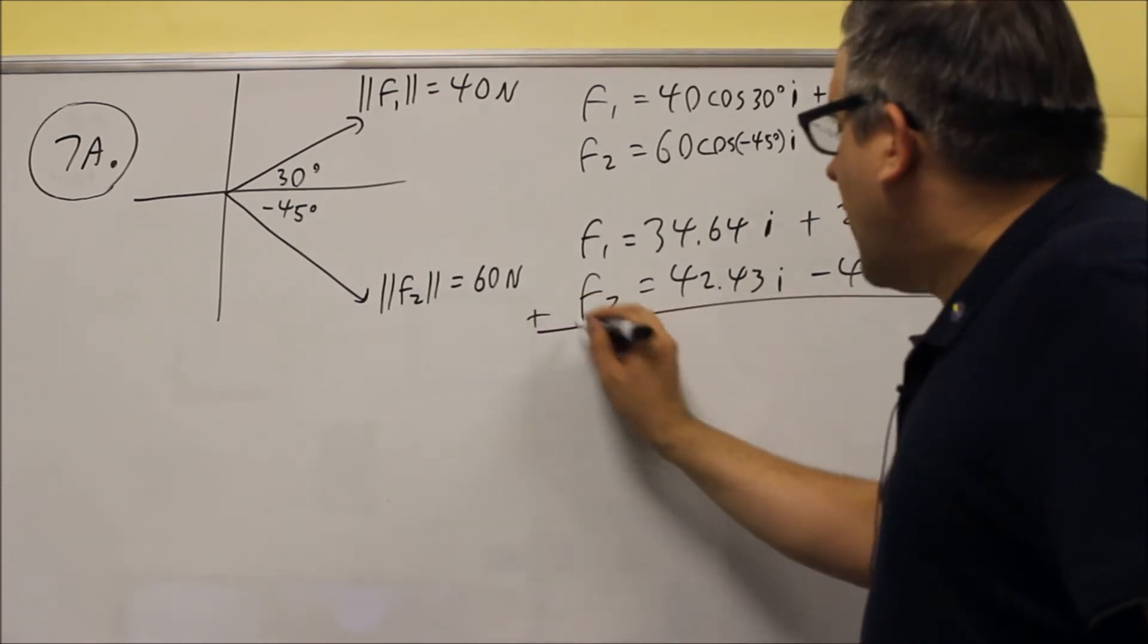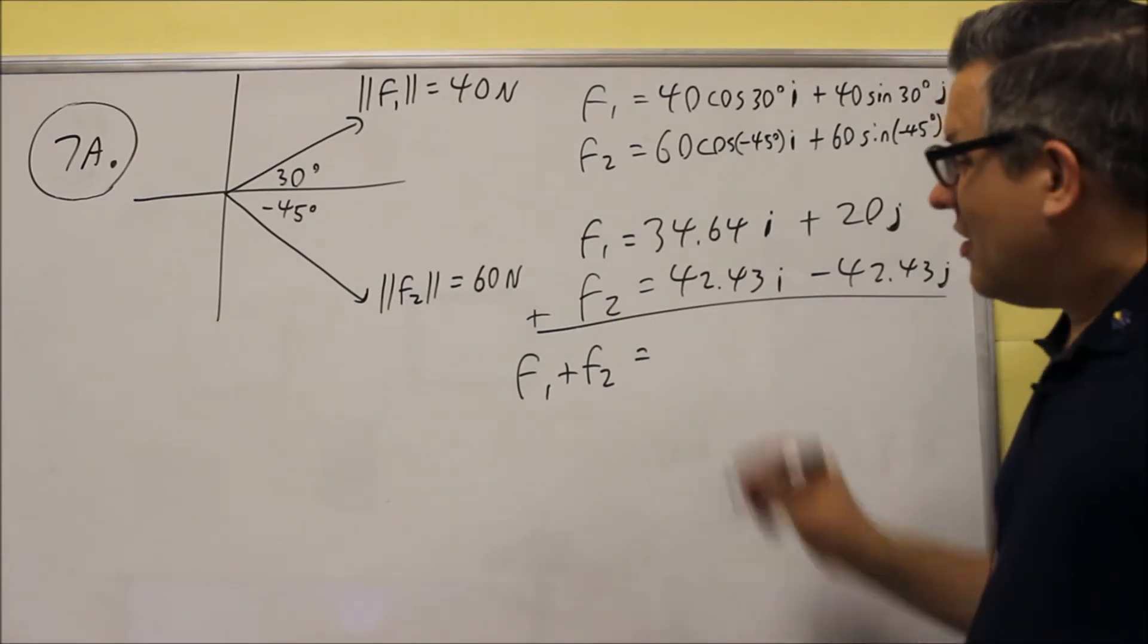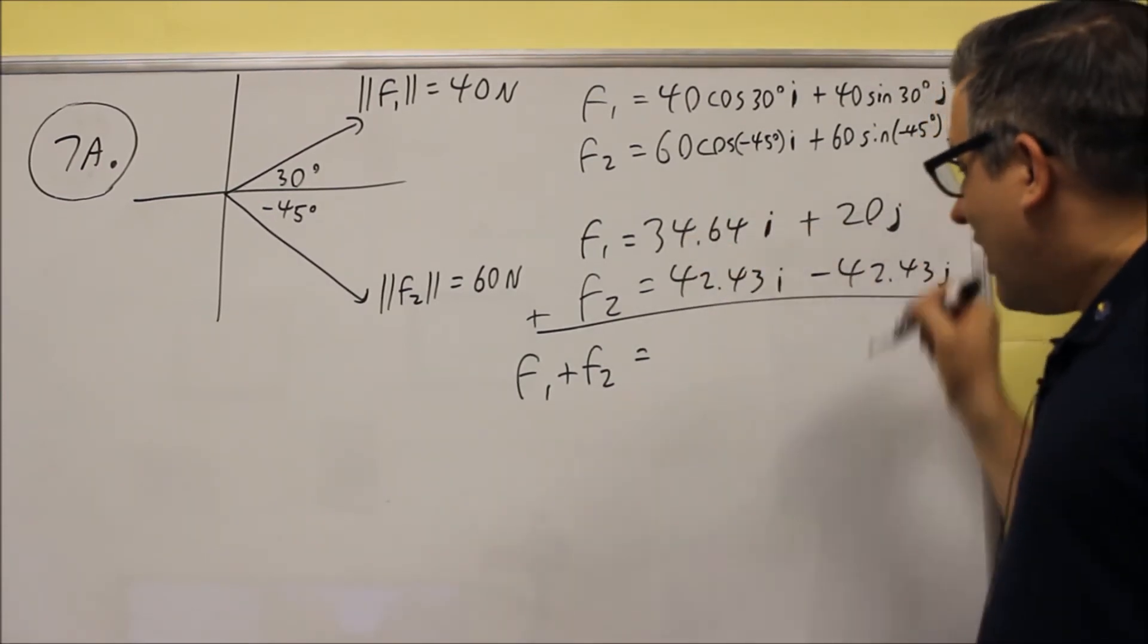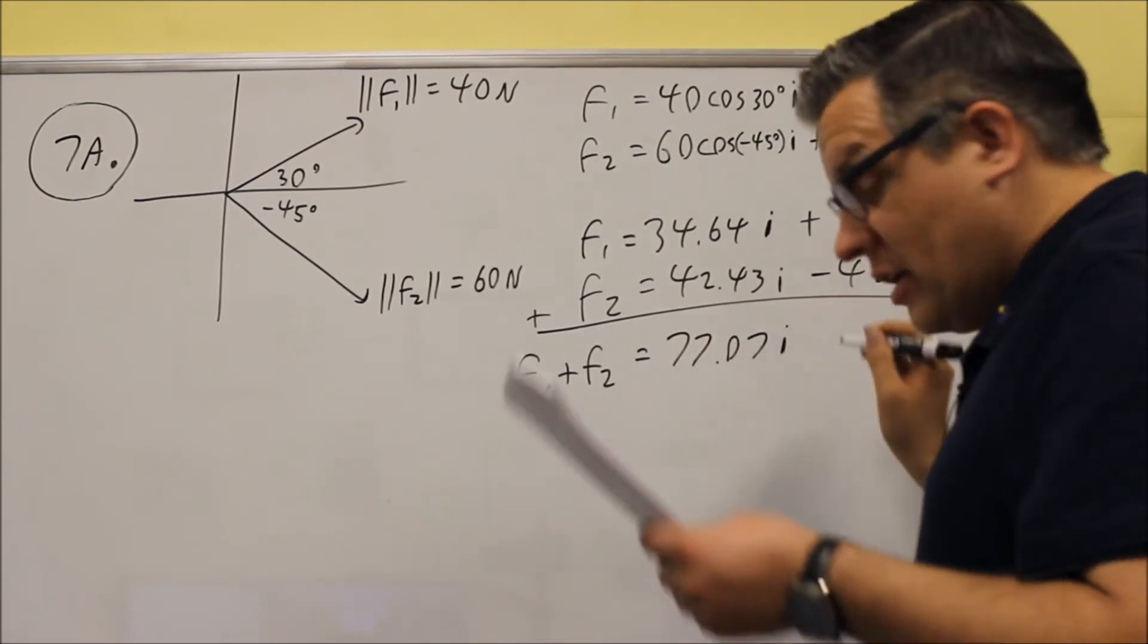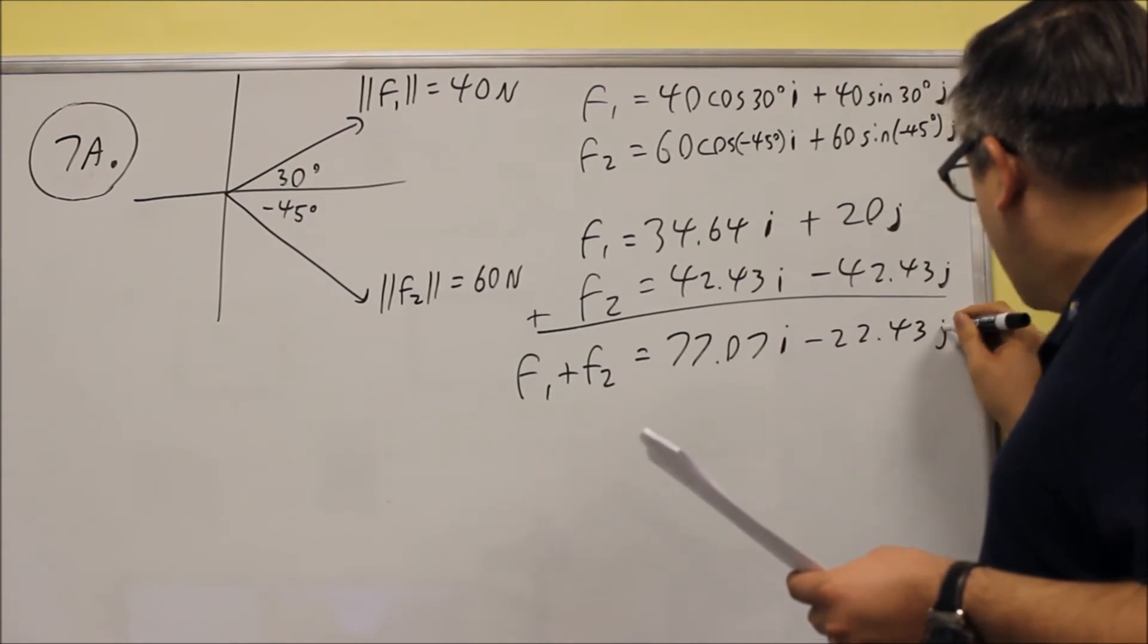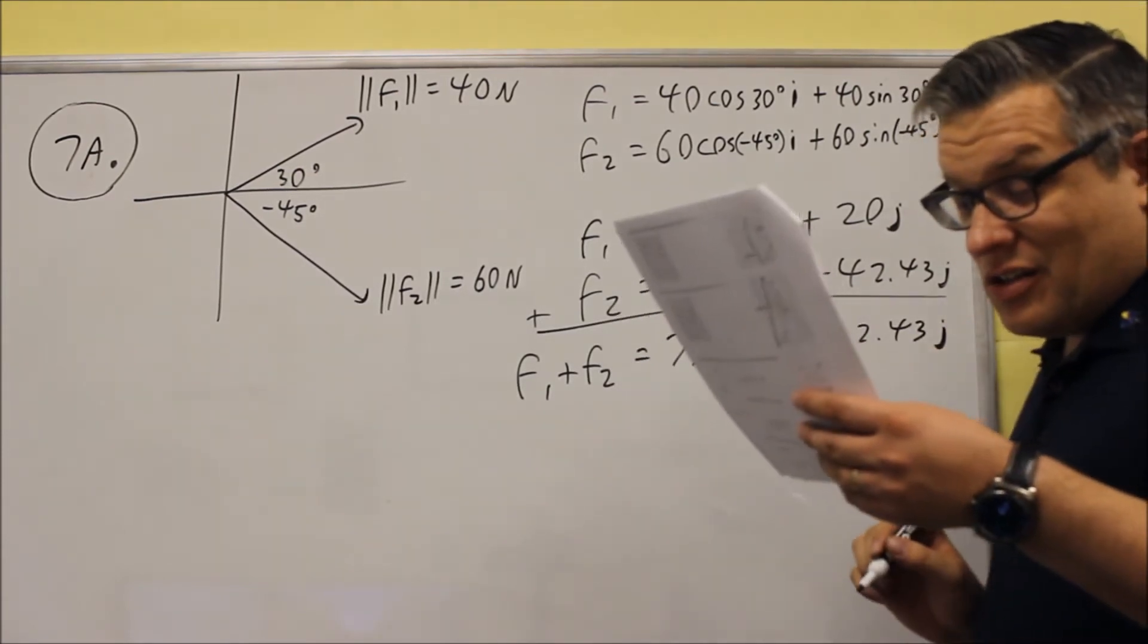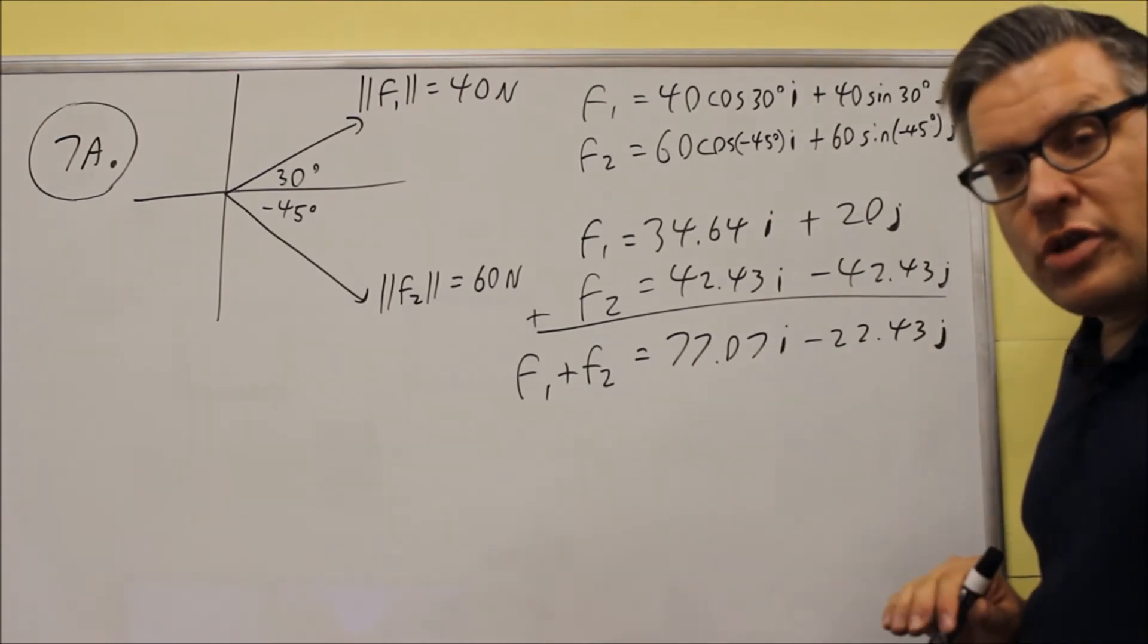To get the resultant, you're going to add both of these together. F1 plus F2. That's your resultant. We're going to add the i's and add the j's together. If you add the i's, 77.07i minus 22.43j when you add that together here. So we added these and these together, and this is the result that we got.